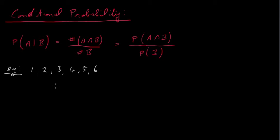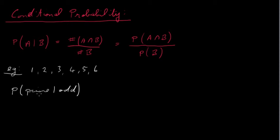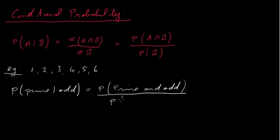The question is: what is the probability that the score we get is a prime number, given that the score is odd? In other words, we throw a die and the score is odd — what is the probability that the score is also a prime number? We write that as P(prime | odd): the probability of prime and odd divided by the probability of being odd.